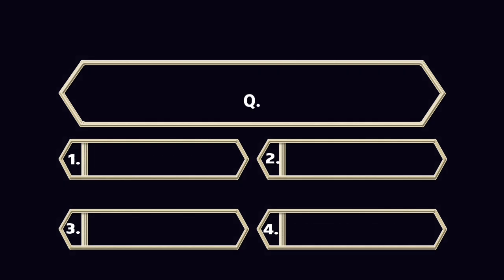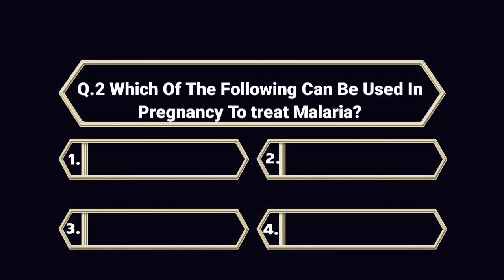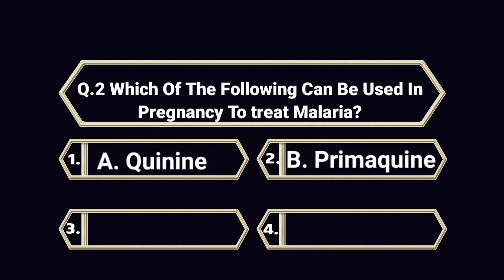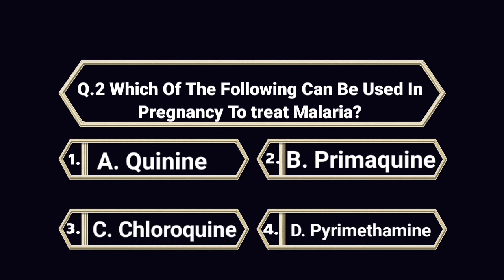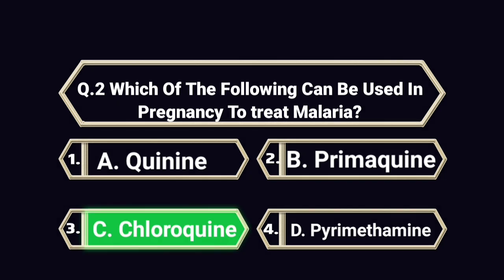Question number 2. Which of the following can be used in pregnancy to treat malaria? A. Quinine. B. Primaquine. C. Chloroquine. D. Pyrimethamine. Answer is C. Chloroquine.